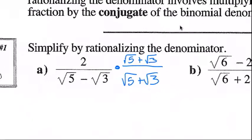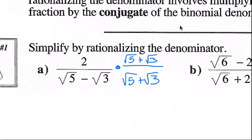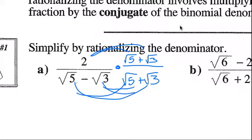From here, we just follow our binomial distribution laws. So here, we're going to multiply: 2 times this, and 2 times this. And in the denominator, we're going to use our FOIL — first, outside, inside, last — and we're going to see what happens to all of our numbers. So let's do that step by step.